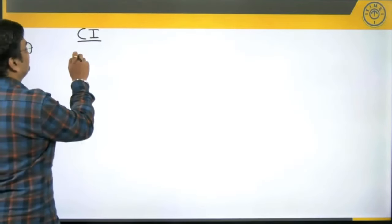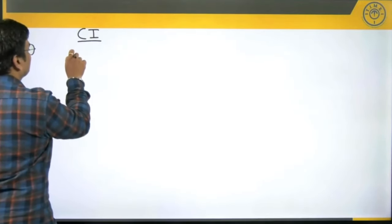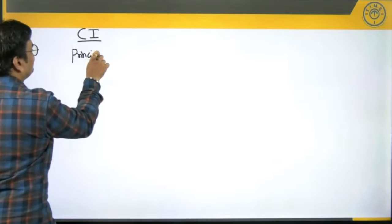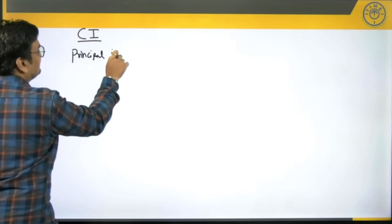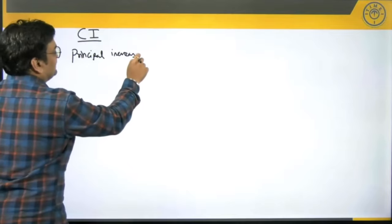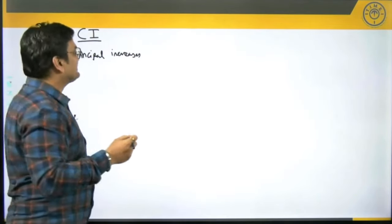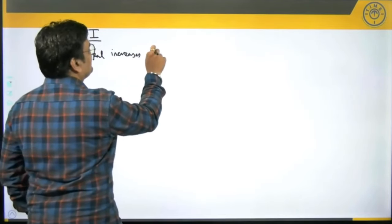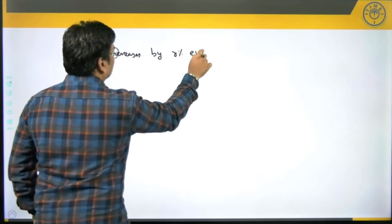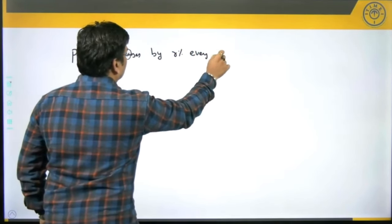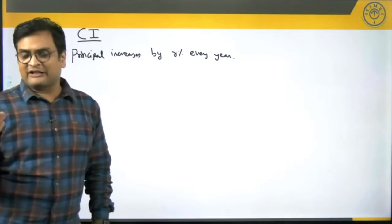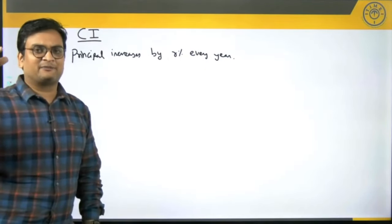Whereas in CI, the principal changes — in fact, the principal increases each year by R percent every year, where R is your rate of interest. Each year it will increase by R percent.